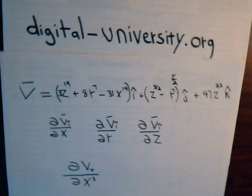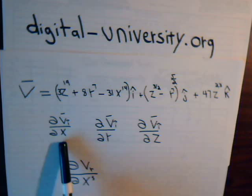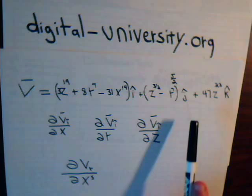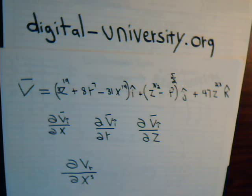We can take the partial derivatives of each of the components of the vector with respect to each one of the coordinate axes. Here we're in three-dimensional space, so for the i coordinate we could take its derivative with respect to the x axis, the y axis, and the z axis. We can do the same thing for the j component and for the k component — take its derivatives with respect to the x, y, and z coordinates.